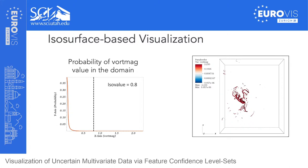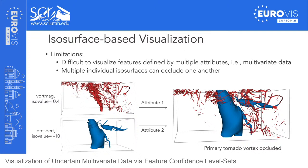Isosurfaces also have limitations. It can be challenging to isolate features defined by multiple attributes — multivariate data — and using individual isosurfaces for each attribute can result in occlusion. Considering two attributes — vorticity magnitude and pressure perturbation — negative values of pressure perturbation are associated with updraft rotational mechanics of an evolving tornado. Visualizing regions with vorticity magnitude of 0.4 and pressure perturbation of negative 10 together can result in isosurfaces that occlude the features of interest.